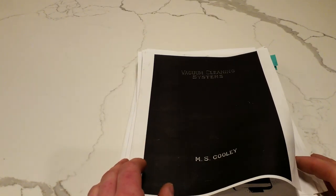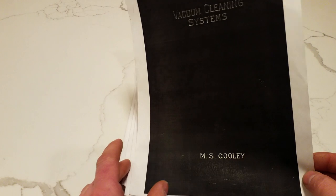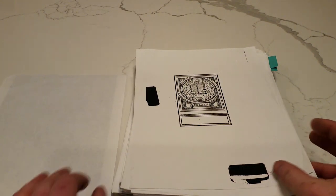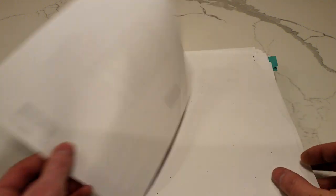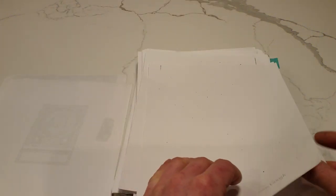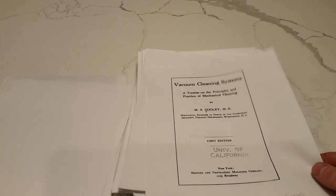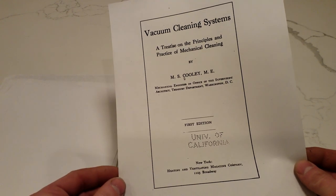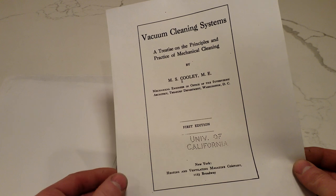This is Vacuum Cleaning Systems written by M.S. Cooley, Maxwell Stevens Cooley, in 1913. M.S. Cooley was a mechanical engineer in the office of the Supervising Architect of the Treasury Department in Washington, D.C.